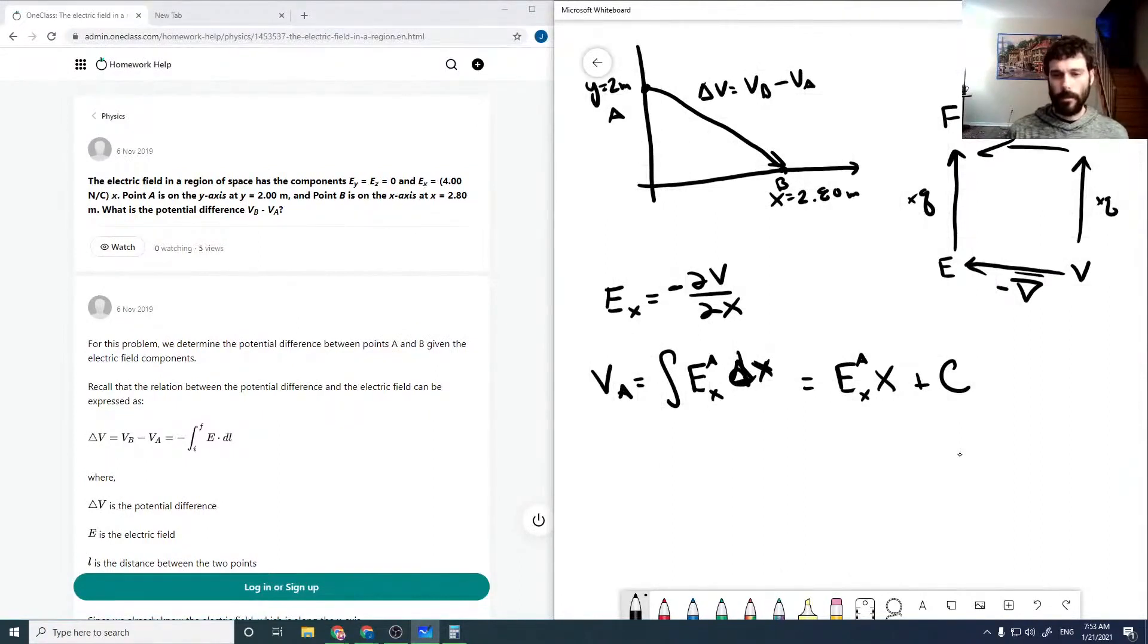And so we can solve for our V_B the same way. Integral E_X_B dX, which is E_X_B times X_B plus our integration constant again. Presumably these would be the same constant as our zero of potential would be the same in both places.